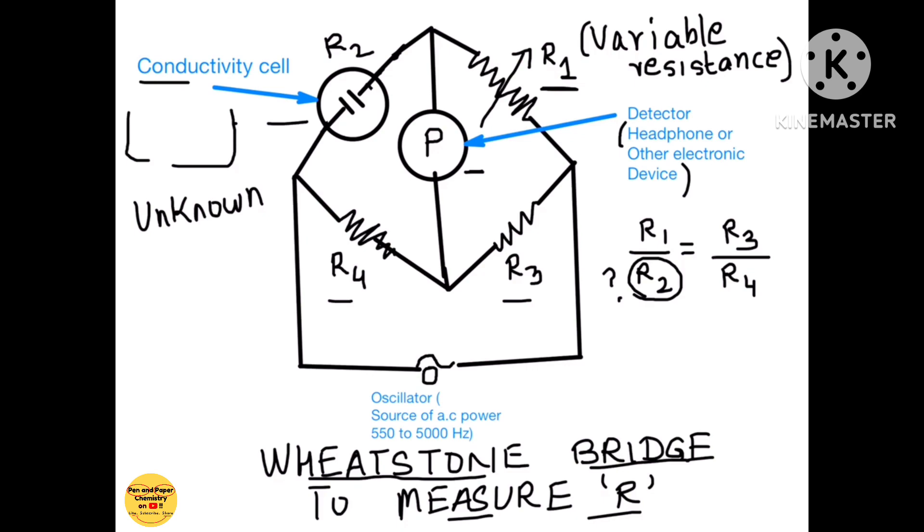If we pass current through this solution, through the electrolyte, we have also read about electrolysis. Electrolysis may take place and this may bring about a chemical change in the electrolyte. So our very purpose is lost. To counter that problem we are using an oscillator over here which is nothing but a source of AC power in the audible range of 550 to 5000 hertz. So that removes the defect or the drawback of the solution getting electrolyzed.